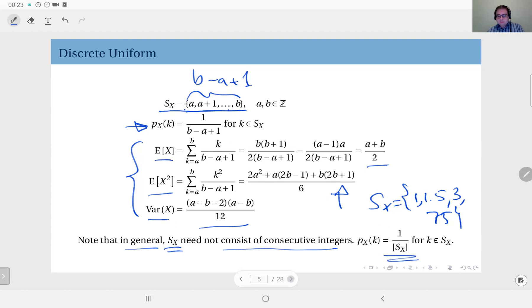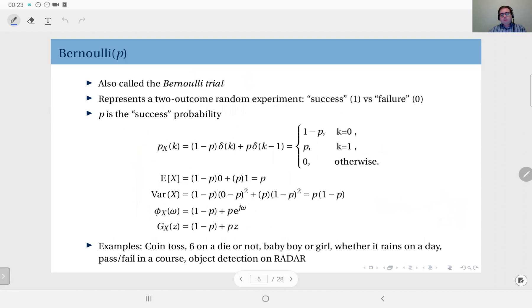Okay, next we will talk about possibly the simplest discrete distribution, which is the Bernoulli distribution. This is alternatively also called the Bernoulli trial. Now here you see the value p in parentheses, and this will be the notation for the parameters of the distribution.